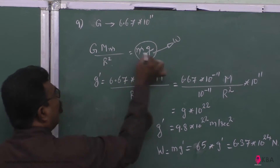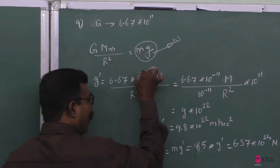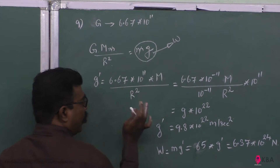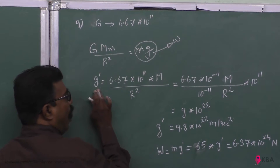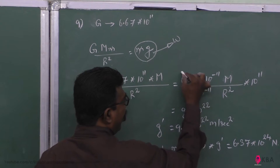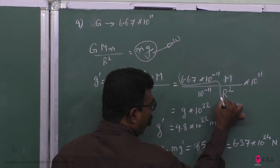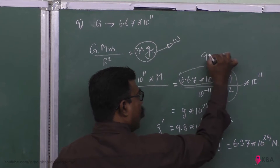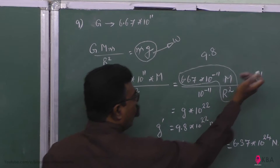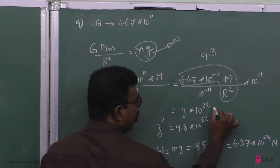So m and m cancel, and g is equal to G into M divided by r squared. That is the original value. Then the new value g dash is equal to 6.67 into 10 to the power of minus 11 into M divided by r squared. So this gives us the change in g.